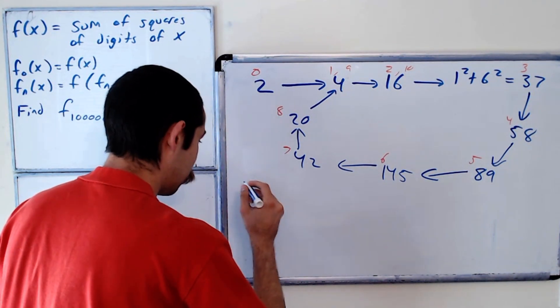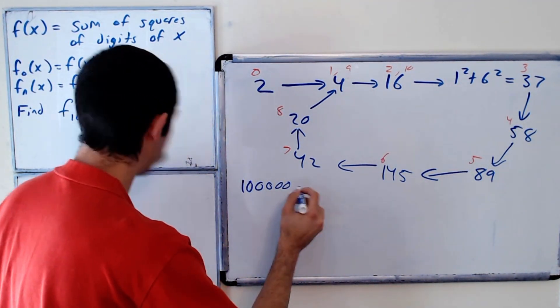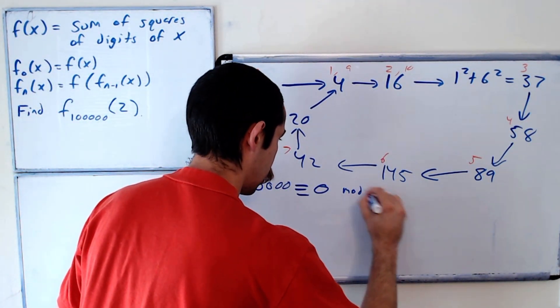Okay, and it's not hard to check that 100,000 is equal to zero mod 8.